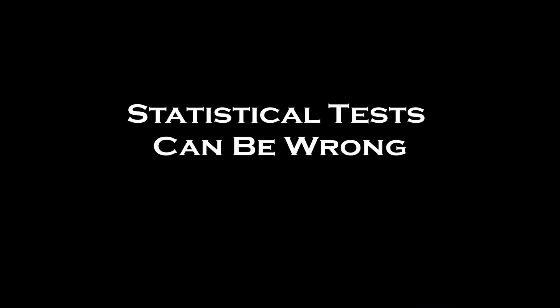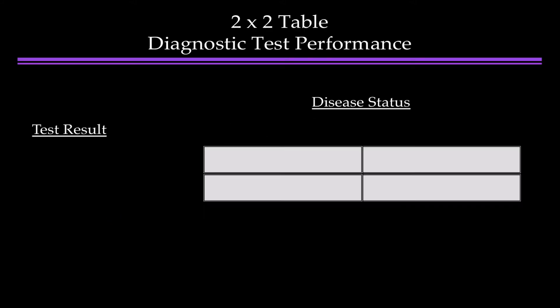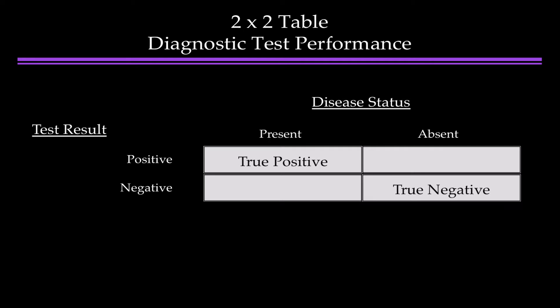Statistical tests can be wrong. That's not all that surprising — it's just like diagnostic tests. They can be wrong. Here's a 2x2 table for diagnostic test performance. The columns are the disease status and the rows are the test results. If the disease is present and the patient has a positive test result, we call that a true positive. If the disease is absent and the patient has a negative test result, we call that a true negative.